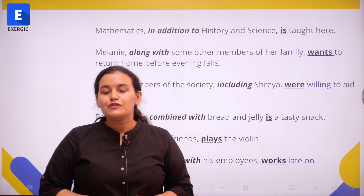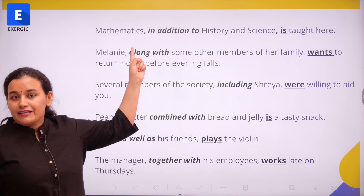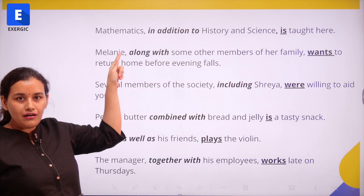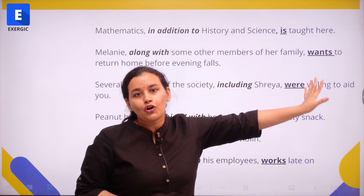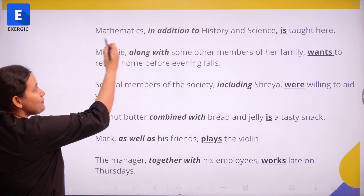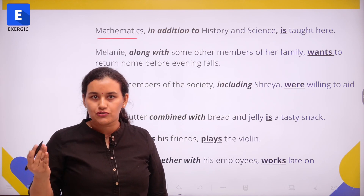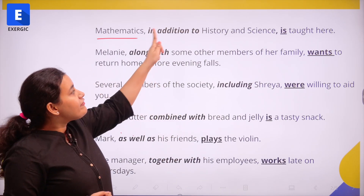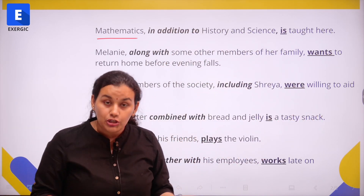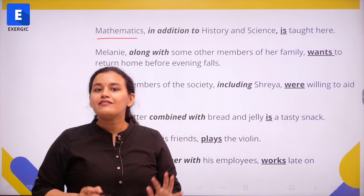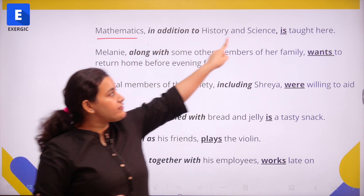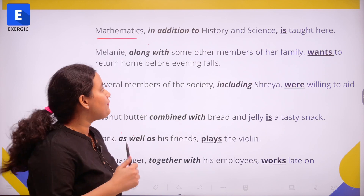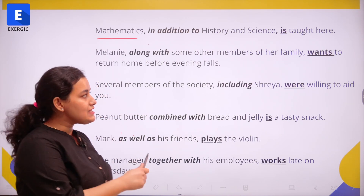Let us look at a few more examples. Mathematics in addition to history and science is taught here. Mathematics, comma, a phrase, comma, the verb. The verb takes the singular form because mathematics is the main subject — a singular noun. Even though we have "in addition to history and science," I am only referring to the main subject followed by a connective phrase, so the verb is also singular: Mathematics in addition to history and science is taught here.